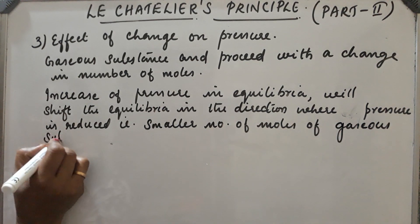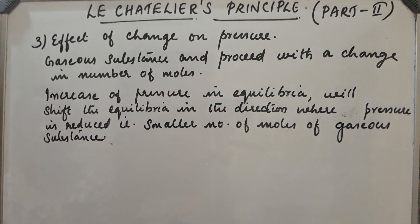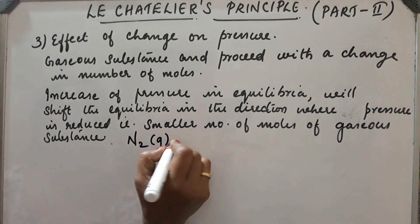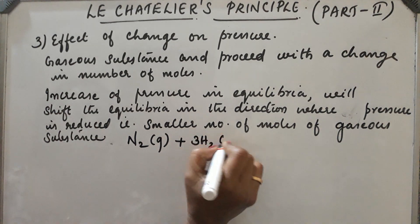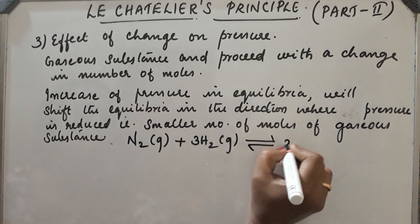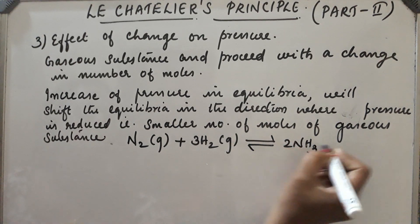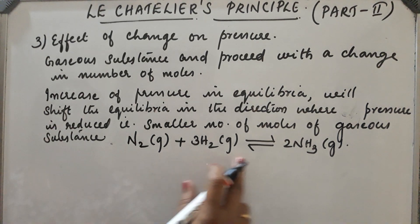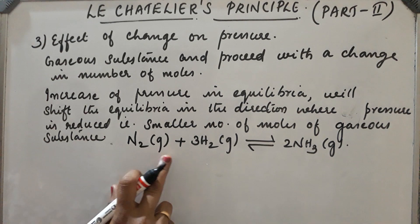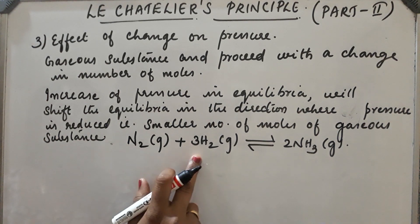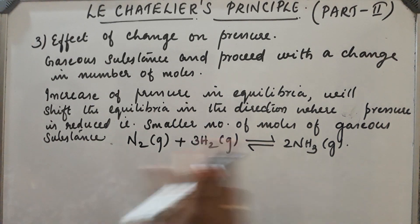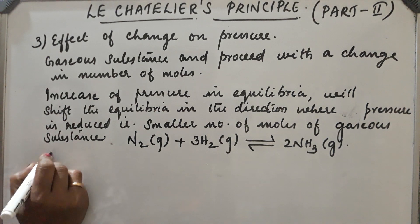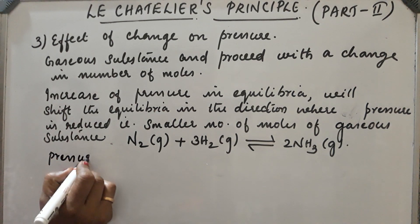Let us take an example to explain this — the manufacture of ammonia. Consider the reaction N₂ + 3H₂ ⇌ 2NH₃. The forward reaction is accompanied by a decrease in number of moles. On the reactant side, number of moles is 1 + 3 = 4, and on the product side it is 2. So the forward reaction is accompanied by a decrease in the total number of moles.